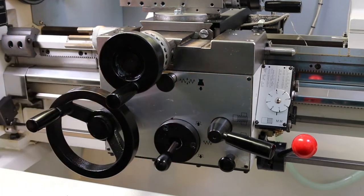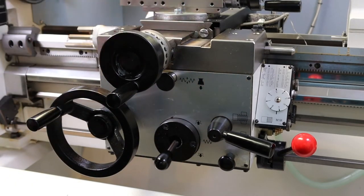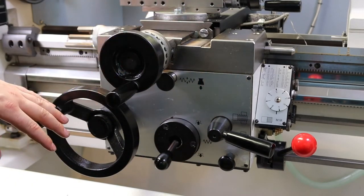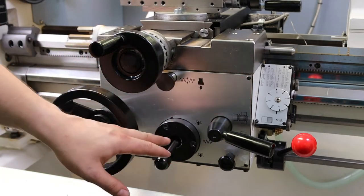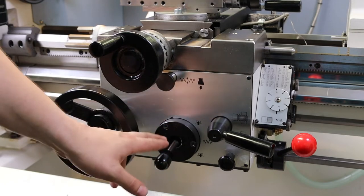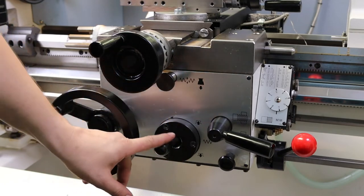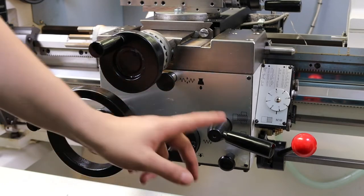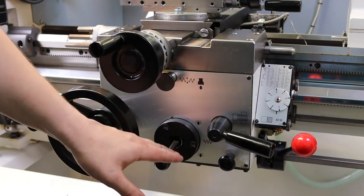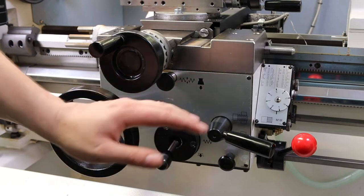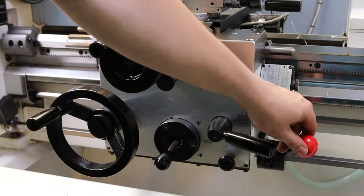Now there's three things to consider. The first one here is the drive. So at the moment that does nothing, but if I have the machine on and I turn this on, you'll see that it will begin to drive the apron, the carriage along the bed.